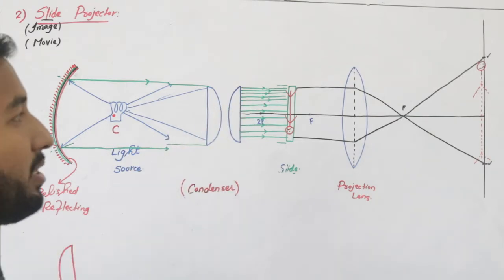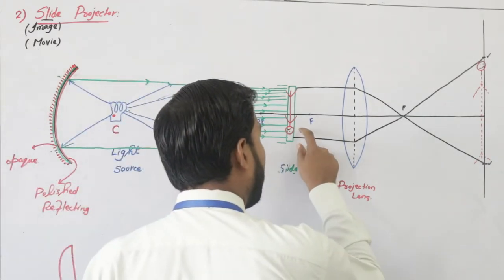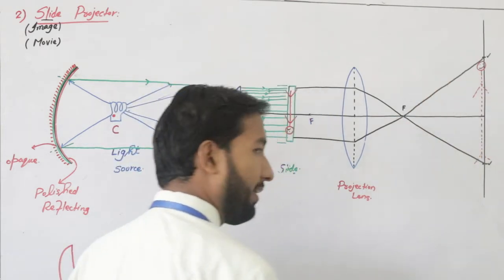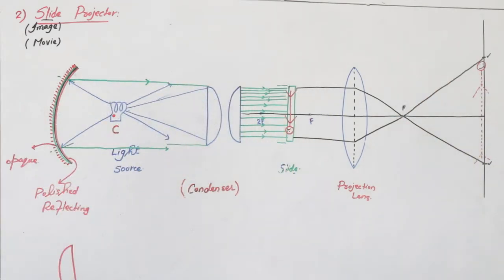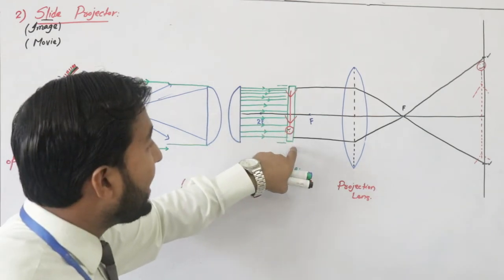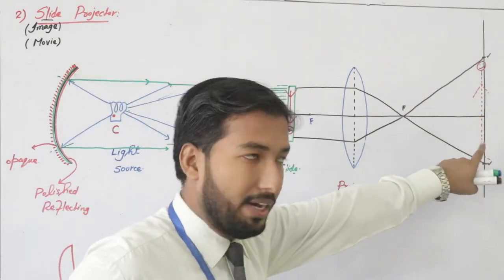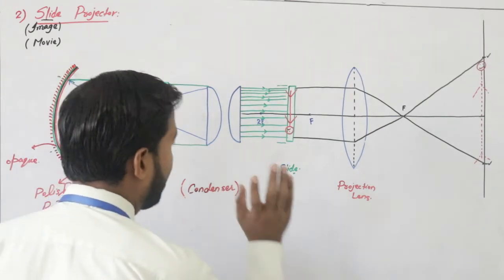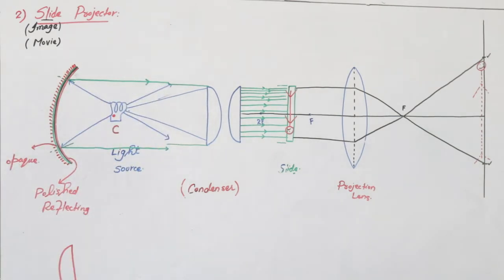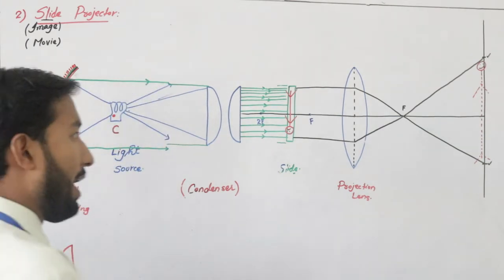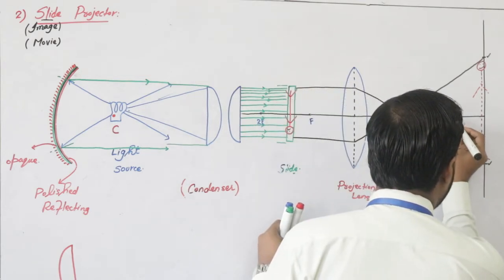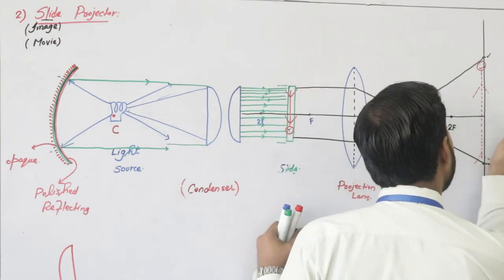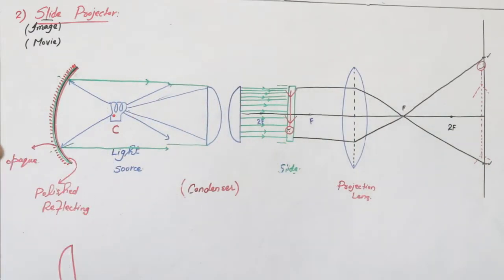Image large ہونی چاہیے — erect ہے بننے والی image، لیکن object کے حساب سے پھر بھی inverted ہے۔ یہ ہمارا slide projector کا topic complete ہو گیا۔ یاد رکھیں slide کو F اور 2F کے درمیان بنانا ہے اور beyond 2F ہی ہمیں image ملے گی — یہ slide projector complete ہوگیا۔